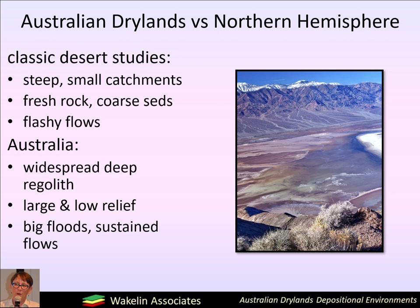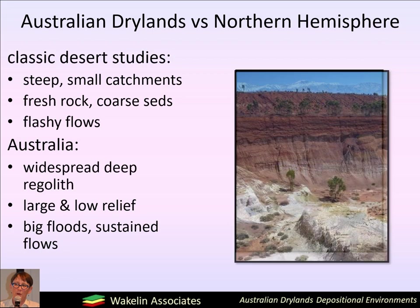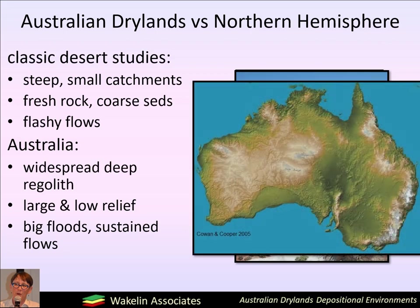Australian drylands are not very much like Northern Hemisphere drylands. This is important because many of the classic desert studies were done in the Northern Hemisphere, places like Death Valley. In those classic studies, the catchments are small and have steep gradients, the rock supplied is fresh and coarse into fluvial transport, and the flow regime consists of short flashy flows. Australia, on the other hand, has a widespread and deep regolith cover, so lots of fine sediments and clays ready to enter fluvial transport. The continent is largely very low relief and has some quite large catchments, meaning flow events can be very sustained with very big floods.